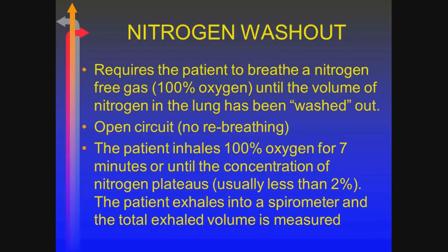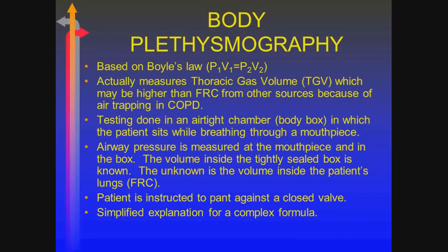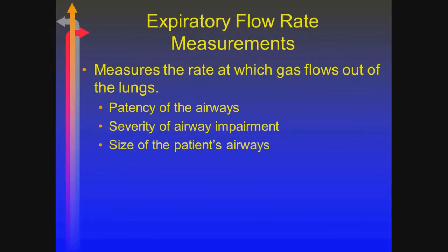Nitrogen washout requires that a patient breathe 100% oxygen until all the nitrogen has been washed out. Usually it takes six or seven minutes, and we collect the volume that's present there, from which we can derive the FRC. The last method, based upon Boyle's Law, is the body box. If we know a series of pressures inside the box and at the patient's airway, and we know the volume of the box, we can determine what volume the patient started with.